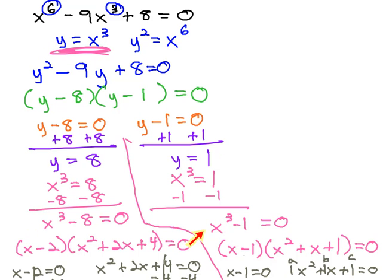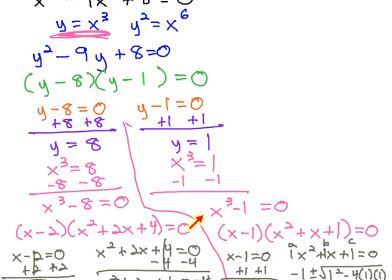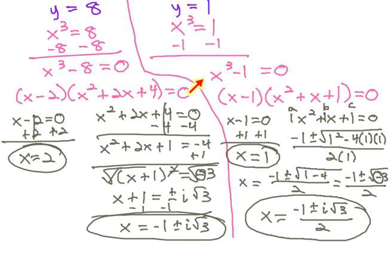We got a difference of squares... I'm sorry, a difference of cubes in both of our equations, and solved those equations by factoring and using completing the square or the quadratic formula on the prime trinomials.